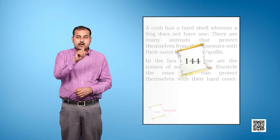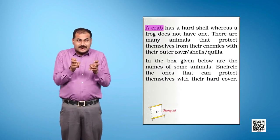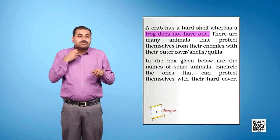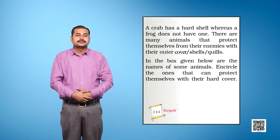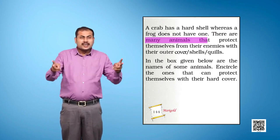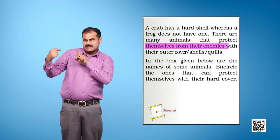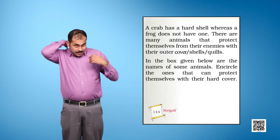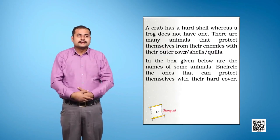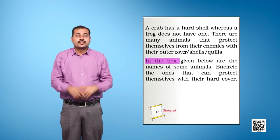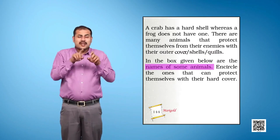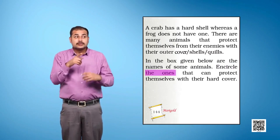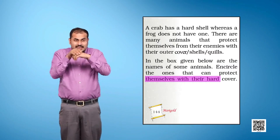Page 144. A crab has a hard shell, whereas a frog does not have one. There are many animals that protect themselves from their enemies with their outer cover or shells or quills. In the box given below are the names of some animals. Encircle the ones that can protect themselves with their hard cover.